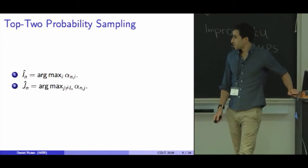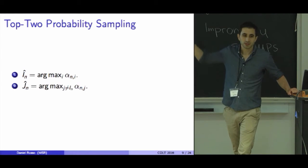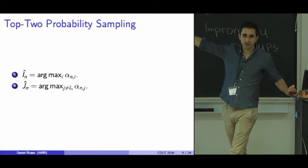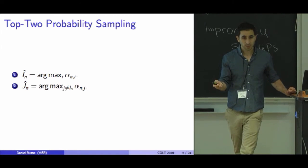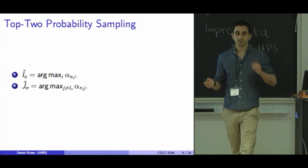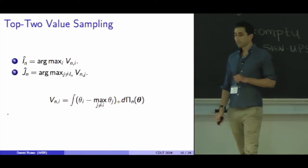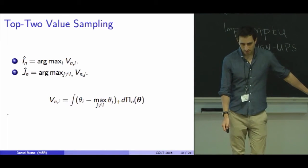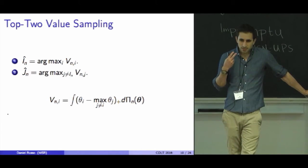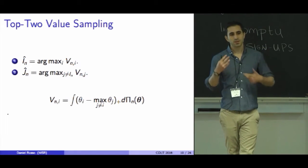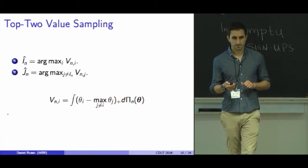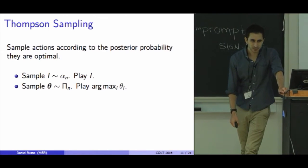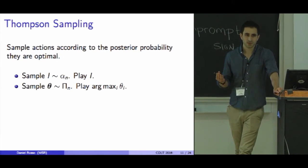One variant of this is where I use these optimal action probabilities to define the top player and the second top design. So i_n is the design I think has the highest posterior chance of being optimal, and j_n is the second most likely. Another variant I'm not really going to go into in this talk is a value-based assessment of the quality of these designs. It assesses not only the likelihood that a design is the best, but also the expected magnitude by which it exceeds other designs. And the last one is going to build on Thompson sampling. I'm going to tell you what Thompson sampling is, and then I'll define the top two variant of this policy.